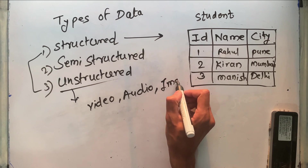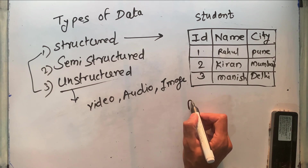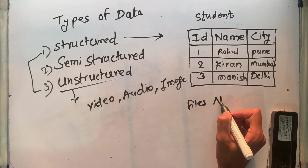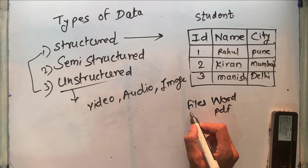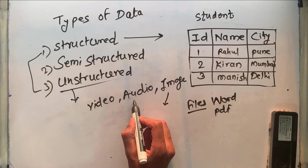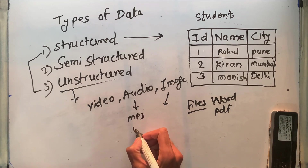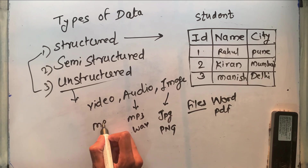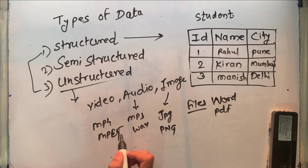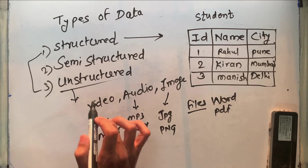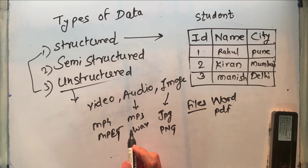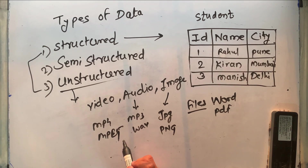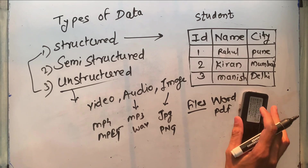Unstructured data means files like video files, audio files, image files, Word files, PDF files — different file types. For example, images in JPG or PNG format, audio in MP3, and video in MP4 or MPG format. This data is known as unstructured data and is also called schema-independent data.